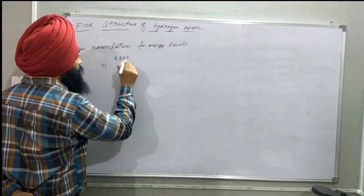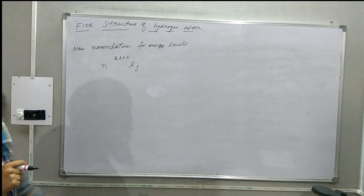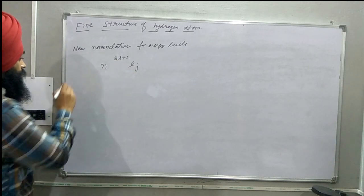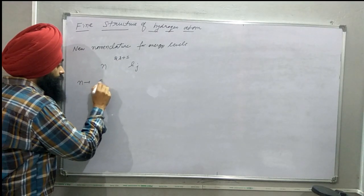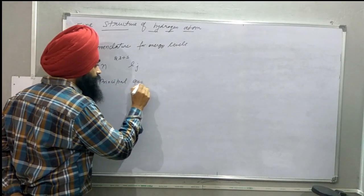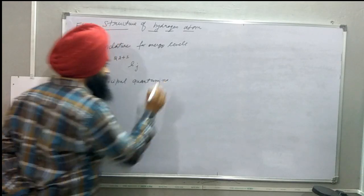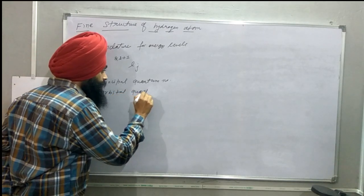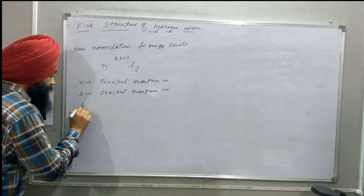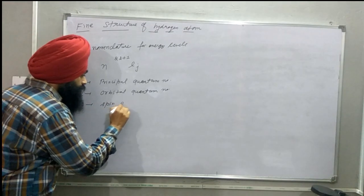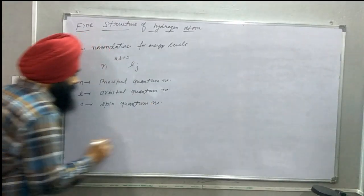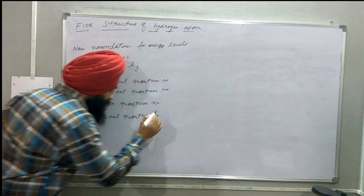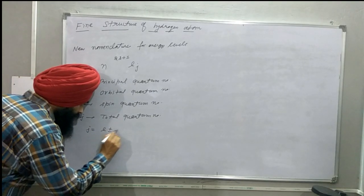This new nomenclature is given by n, 2s+1, l, j. Every alphabet has its meaning. We have n, the principal quantum number; l, the orbital quantum number; s, the spin quantum number; and j, the total quantum number. The value of j is equal to l plus or minus s.